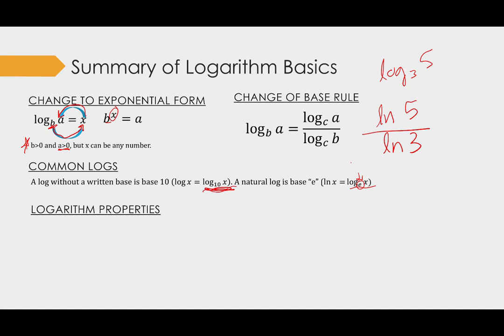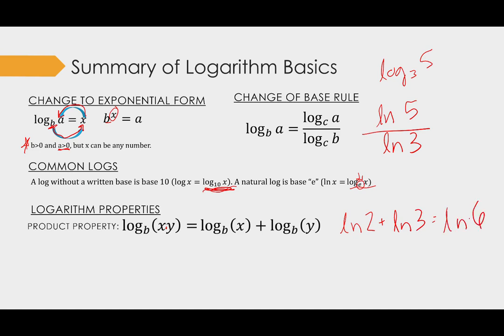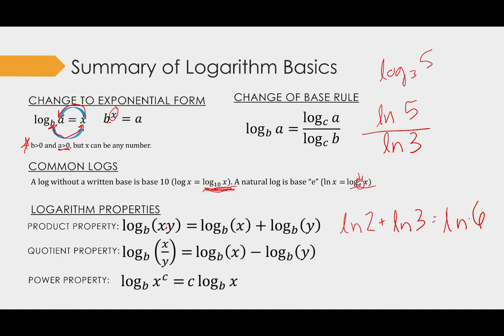Three logarithm properties that are going to help you with these types of problems are the product property, which you have things multiplied inside. You can rewrite those as addition, and you can go the other way around. So if we had LN of 2 plus LN of 3, we could simplify that as the LN of 2 times 3 or 6. It goes both ways. Quotient property, same thing, but with subtraction. We could write it either way. And the power property is if you have something in the exponent of the logarithm, you can bring it out front and multiply it instead. If you have any questions about those, make sure you review these properties. They're going to help a lot when we start solving these problems.